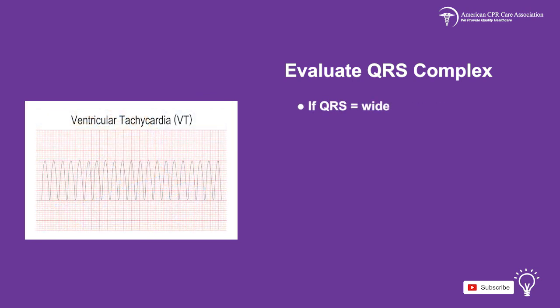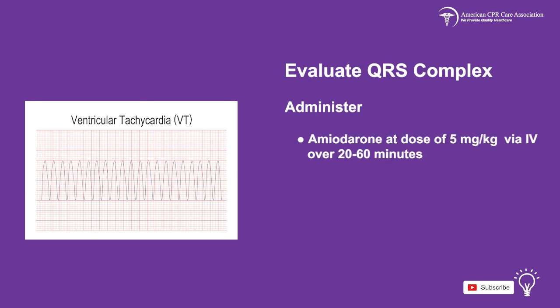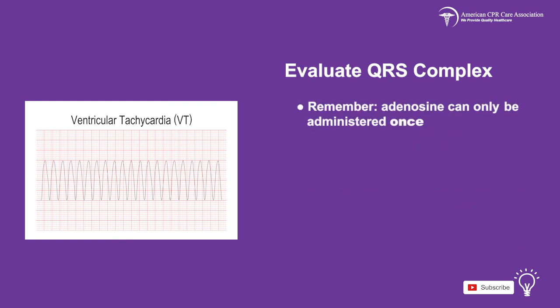If the QRS complex is wide, then the child may be suffering from ventricular tachycardia, and you must treat the reversible causes, then administer the following drugs: amiodarone at a dose of 5 mg per kg via IV over 20 to 60 minutes, or procainamide at 15 mg per kg via IV over 30 to 60 minutes. Remember that adenosine may only be administered once. Cardioversion can be attempted at 0.5 to 1 joule per kg, and a 12-lead ECG obtained as further treatment.